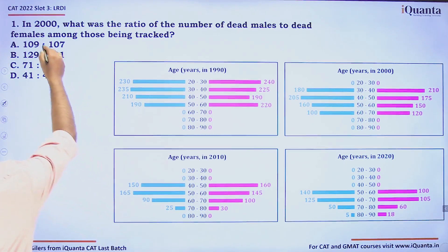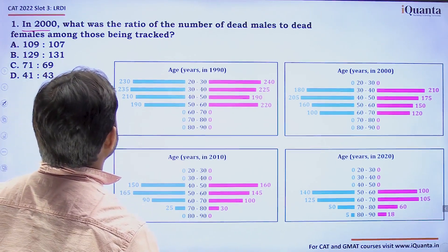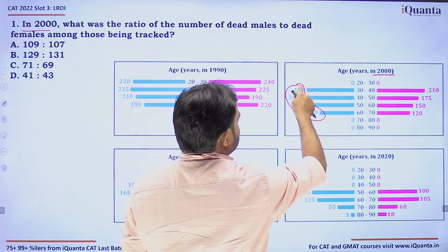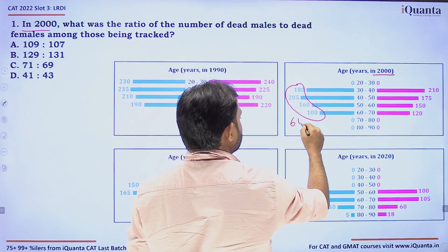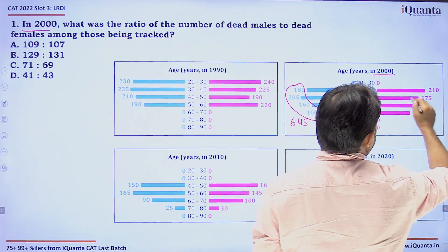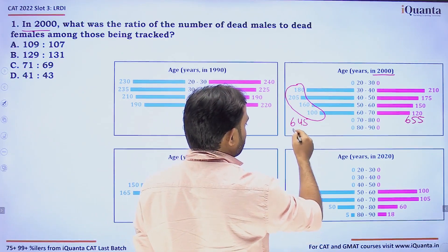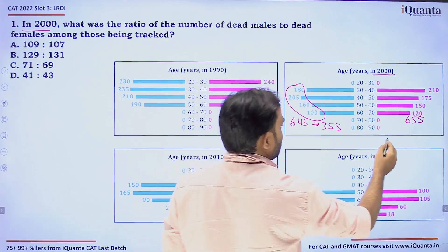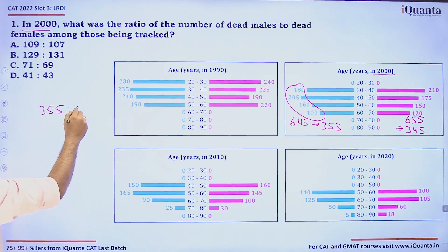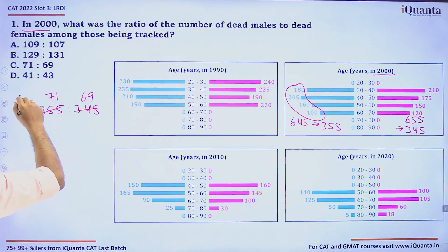Question 1: In 2000, what was the ratio of dead males to dead females among those being tracked? Reading the 2020 chart: alive males = 160 + 100 + 260 + 440 — wait, for year 2000: alive males sum to 645, and alive females sum to 655. So dead males = 1000 − 645 = 355, and dead females = 1000 − 655 = 345. The ratio is 355:345. Dividing both by 5 gives 71:69. Answer is C.